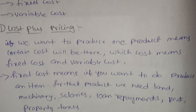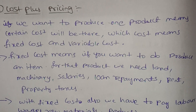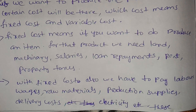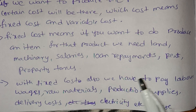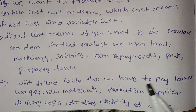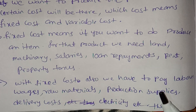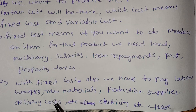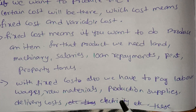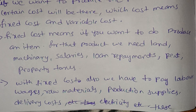Variable costs change with production levels. These include labor wages, raw materials, production suppliers, delivery costs, and electricity — all of these are variable costs.